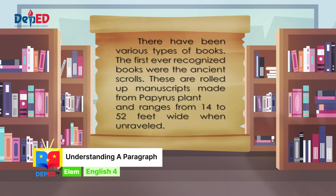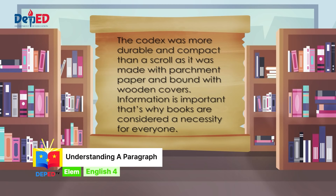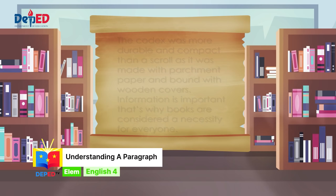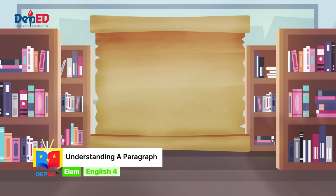There have been various types of books. The first ever recognized books were the ancient scrolls. These are rolled-up manuscripts made from papyrus plants, and range from 14 to 52 feet wide when unraveled. The second type of book was the book-to-go of the Romans. More similar to the style of books today, the Romans created some of the first codices from as early as the first century common era. The codex was more durable and compact than a scroll, as it was made with parchment paper and bound with wooden covers. Information is important. That's why books are considered a necessity for everyone. This resulted in books being printed. The first recorded printed book in history is the Diamond Sutra of Mahayana Buddhism. Books in schools are all products of printing.